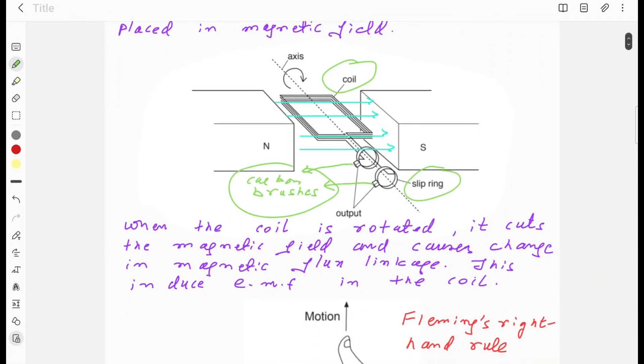So when the coil is rotated, it cuts the magnetic field lines and this causes change in magnetic flux linkage and this induces EMF.